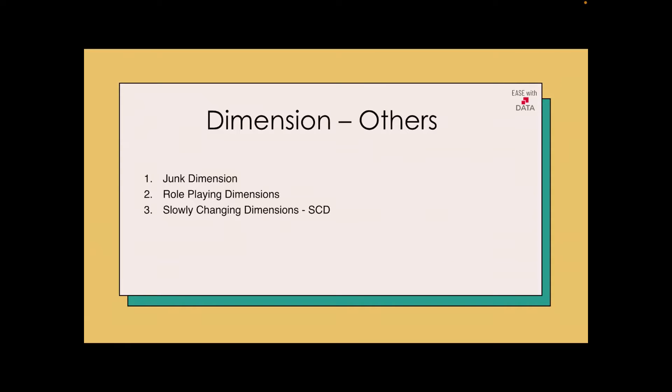In this video we are going to discuss other types of dimensions that we have. We have junk dimension, degenerated dimension, role-playing dimension, and slowly changing dimensions. We'll look into each of them elaborately. First we'll discuss junk dimension.